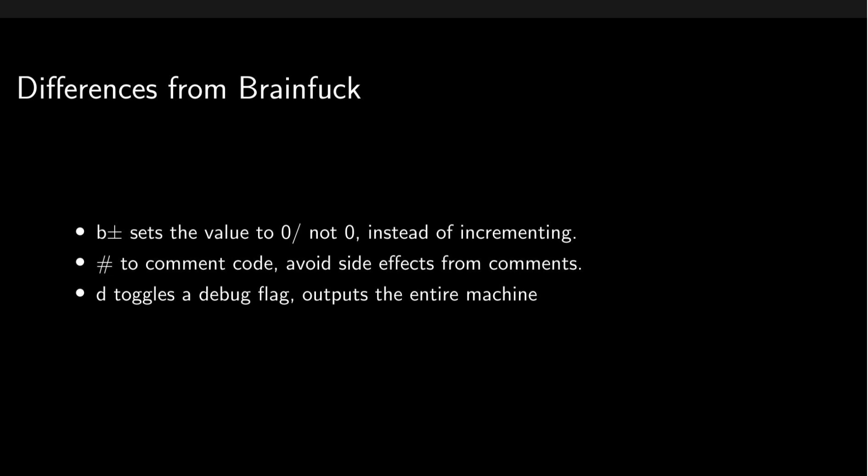That's right, we have two more instructions to introduce. Since we introduced character-based instructions before, commenting the code could have side effects in normal BrainFuck. Stealing from Python, an octothorpe will end the line of code right there — yes, octothorpe is the pedantic term for the hashtag symbol. The second is a D instruction, which I implemented to toggle a debug flag to output all of the data at the end of each line. This was a happy little accident that I used to make sure my implementation worked, and figured to include it.